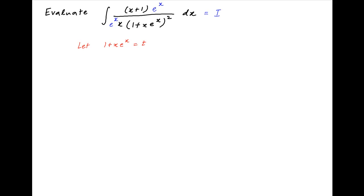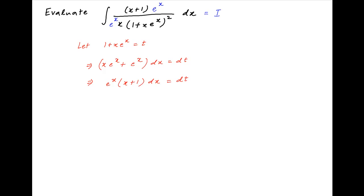Let 1 plus x times e raised to the power x be equal to t. Taking the derivative of both sides, we get x times e raised to the power x plus e raised to the power x dx is equal to dt. Taking e raised to the power x common on the left-hand side, we get e raised to the power x times x plus 1 times dx is equal to dt.